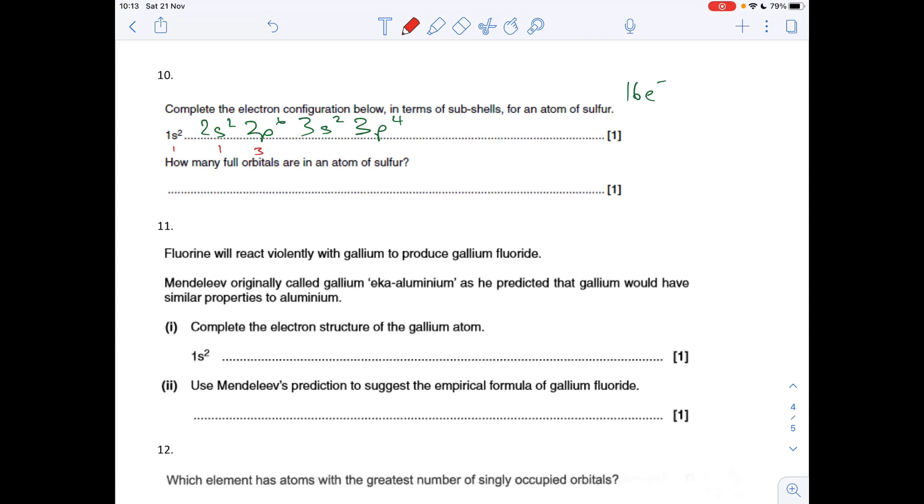There's one there, another full orbital there, three full orbitals there, one there. Then if we just think about that p4, there's boxes: you've got half-filled and then pair up, so we've got one full orbital there. That's one, two, five, six, seven.